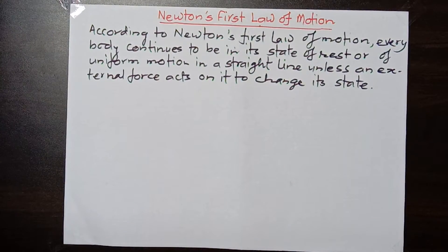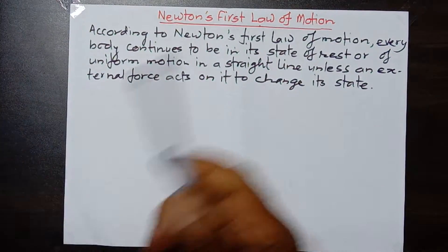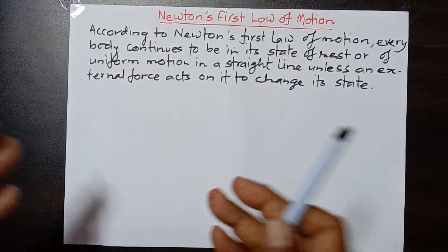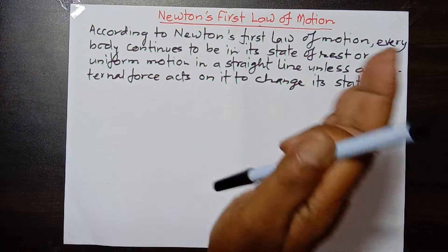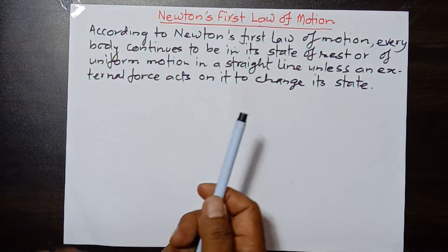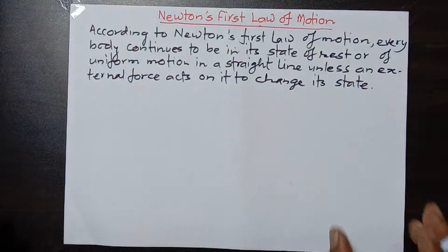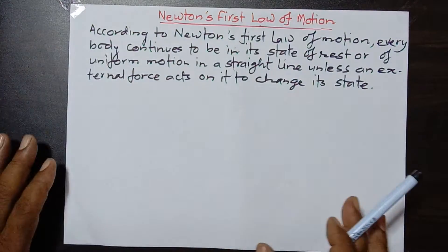This is Newton's first law of motion. Looking at this, what can we say? If a body is at rest, it remains at rest, and if a body is in motion, it continues its motion in the same direction or same straight line. Only if force is applied on it will it be able to change its state. This is the simple understanding of Newton's first law of motion.